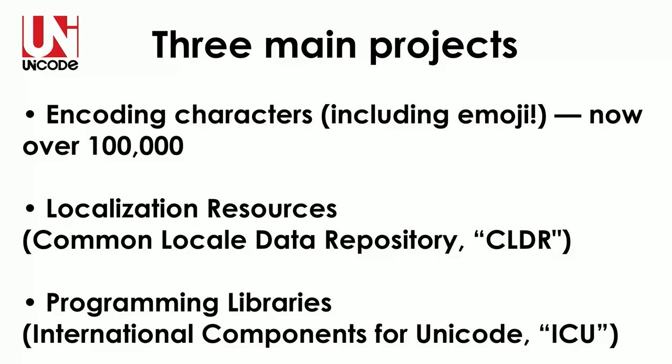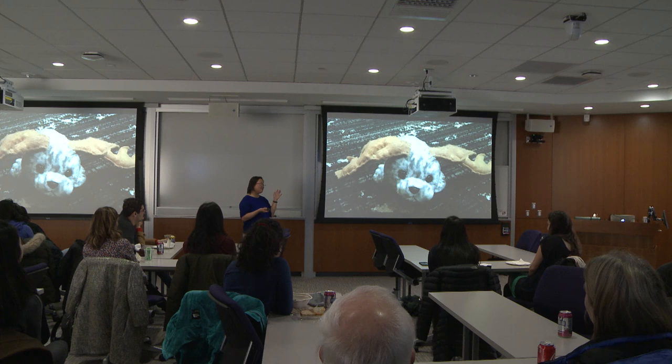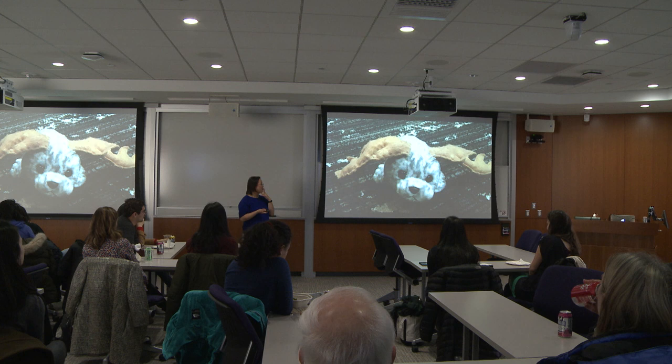The CLDR includes all the various names for emoji in different languages. They also have programming libraries called the International Components for Unicode, or ICU. Very funny — CLDR, most people don't even know what the full name is because we just call it CLDR. Apparently some guy's girlfriend misheard 'CLDR' and thought he said 'seal deer,' so she made him a little stuffed animal seal deer — which has had all kinds of surgery and has become an unofficial mascot of that part of Unicode.